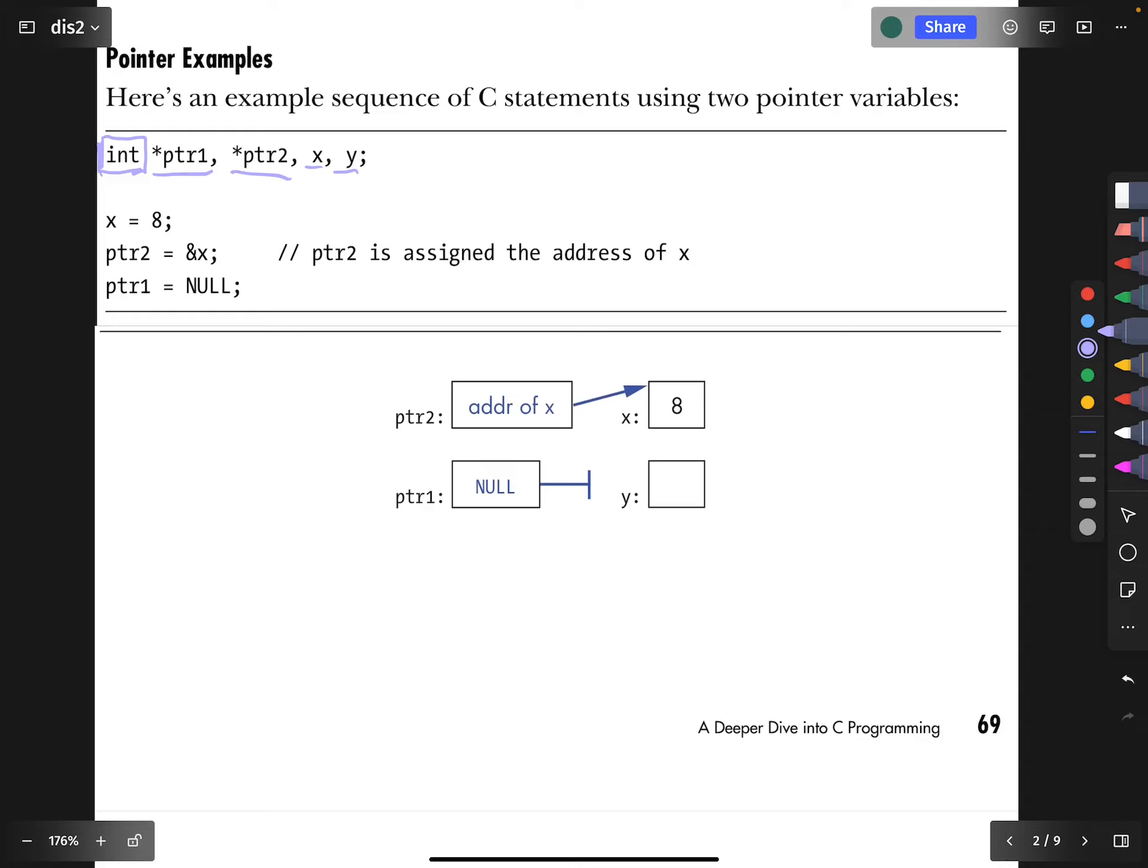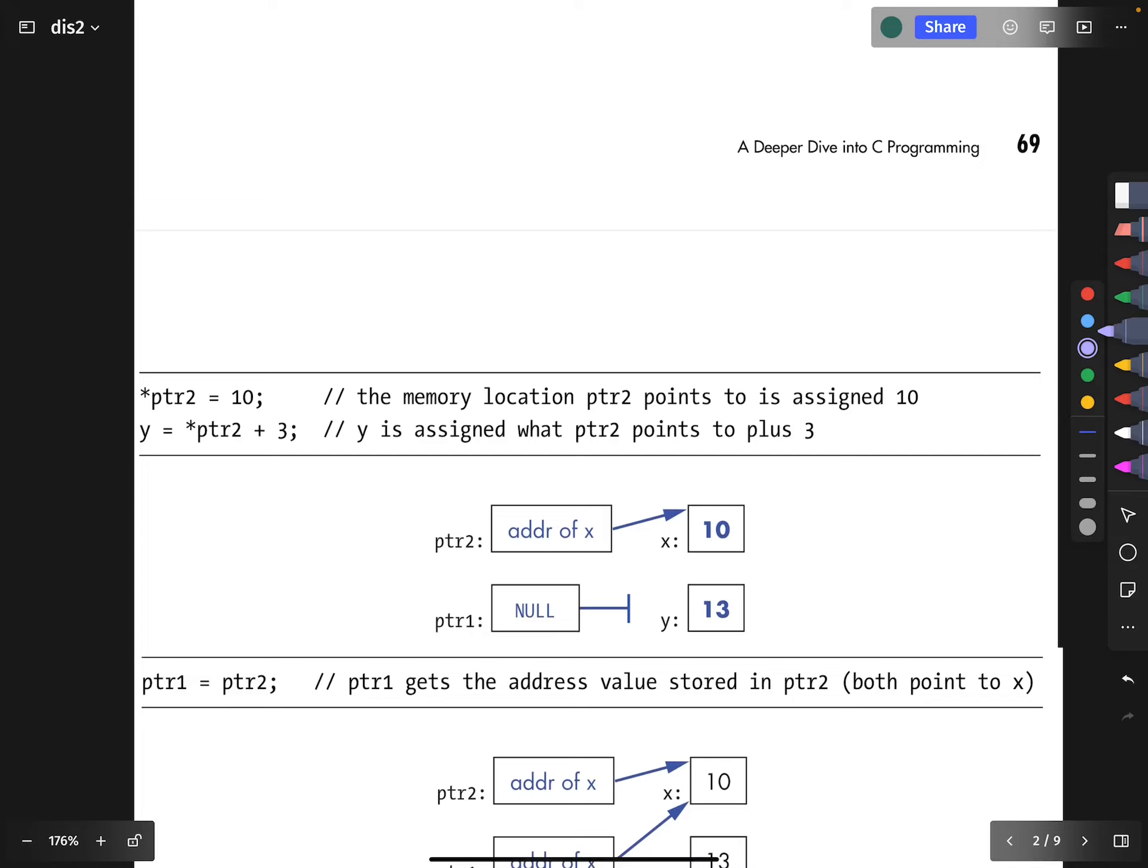So what happens here in this example code? X is initialized as 8. Pointer two is initialized as the address of x. Pointer one is initialized as null. What happens next? We dereference pointer two. We follow pointer two to its address and put a 10 there. We might as well look at the diagram and see that effectively that causes this diagram.